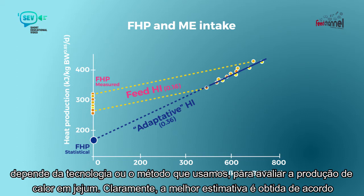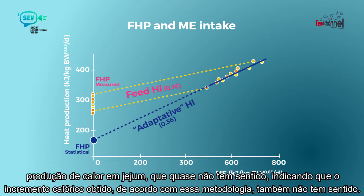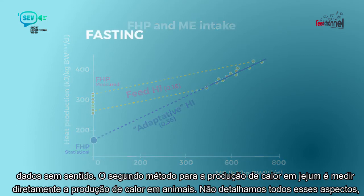Clearly, the best estimate is obtained from actually measured fasting heat production, and the so-called regression fasting heat production produces an estimate that is almost meaningless, which also means that the heat increment obtained according to that methodology is meaningless. That technology is used with variable ME intakes, but it should not be used anymore in the future since it provides very strange, meaningless data.